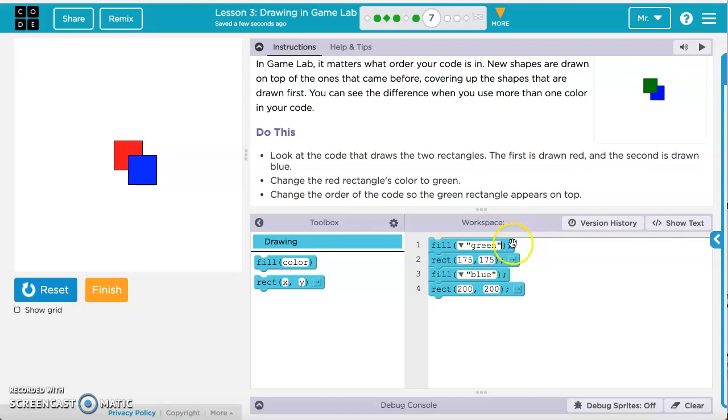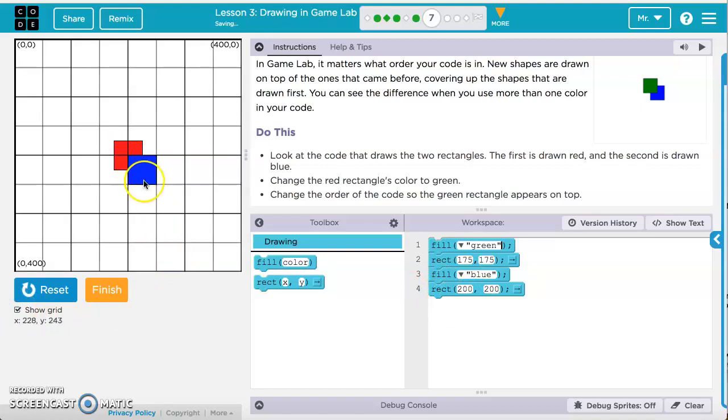Now the code makes it so that anything that happens happens in order. So this is going to happen first, it's going to change the color to green, then it's going to draw a rectangle at 175, 175, then it's going to change the color to blue, and draw a rectangle at 200, 200. So that's why it's drawing the red first and then the blue.